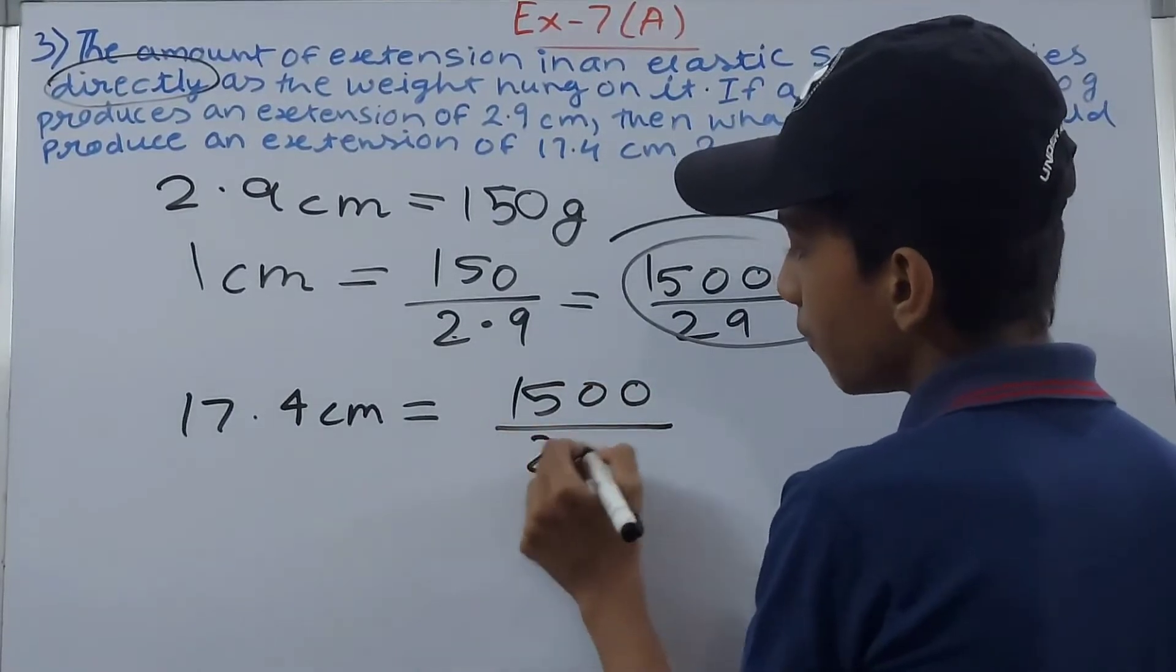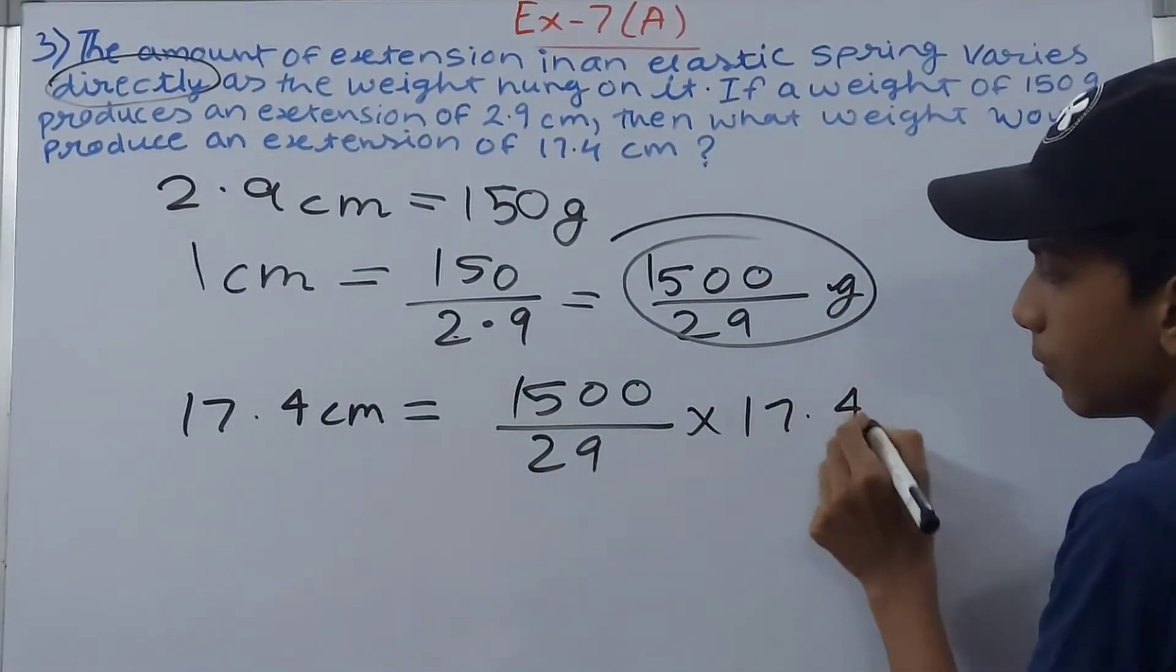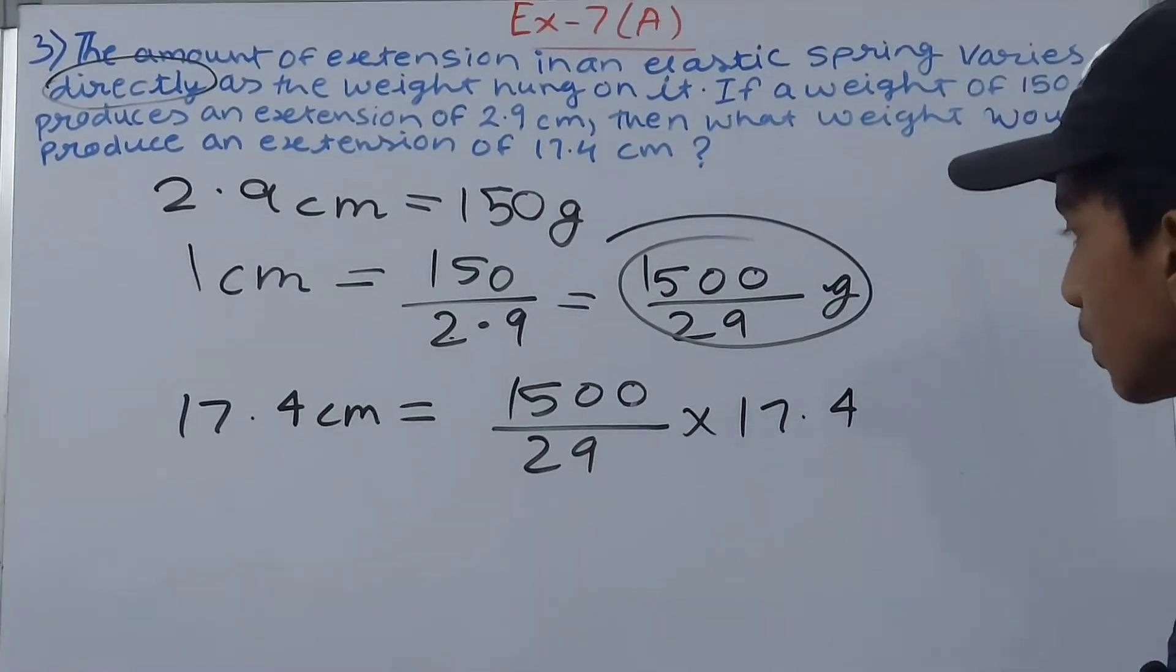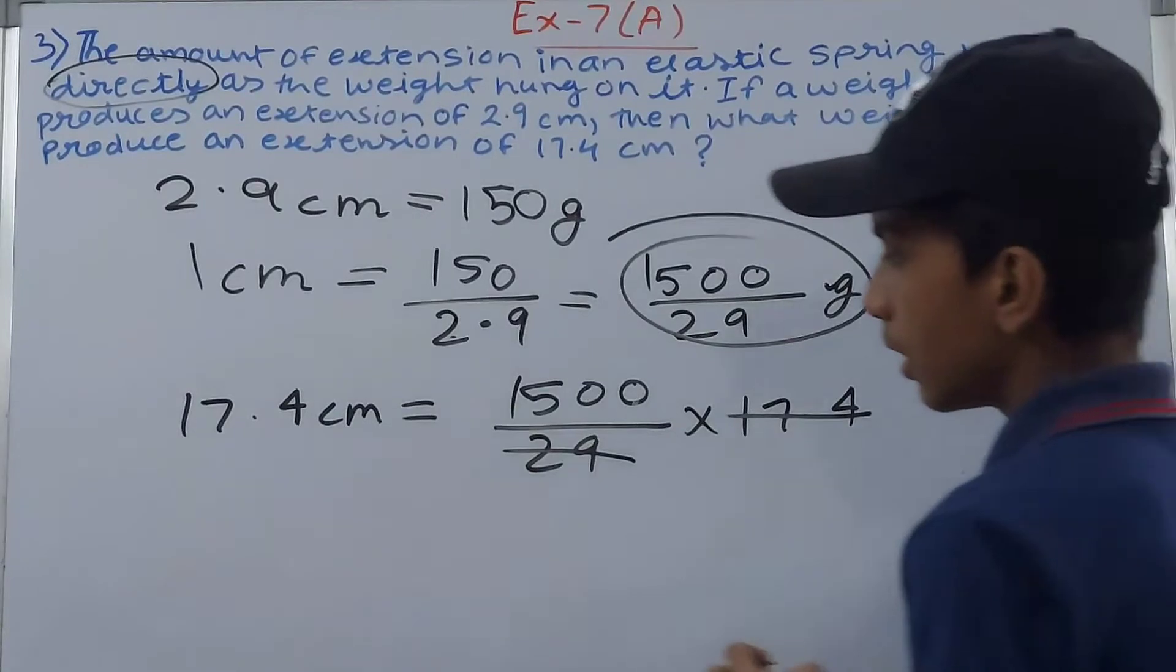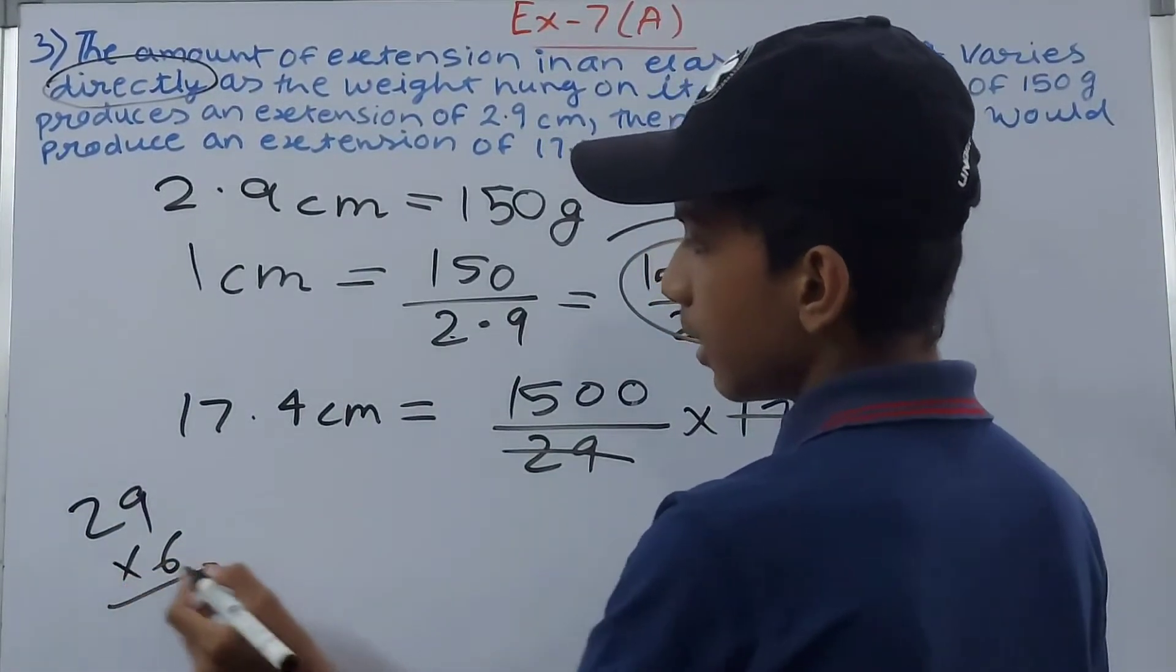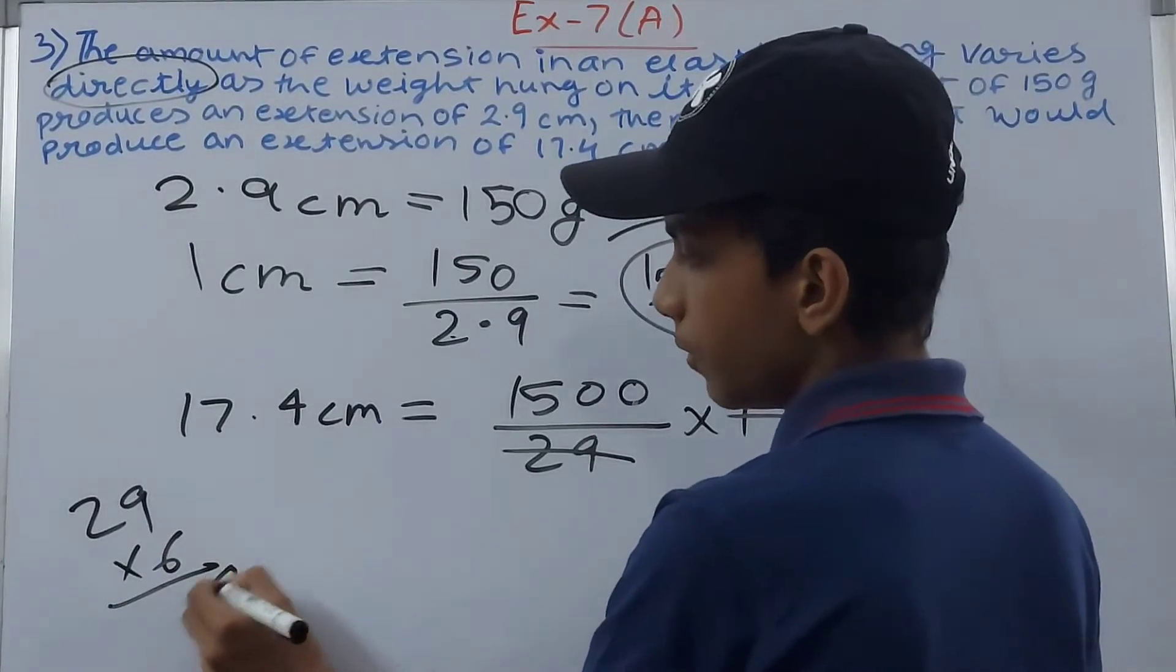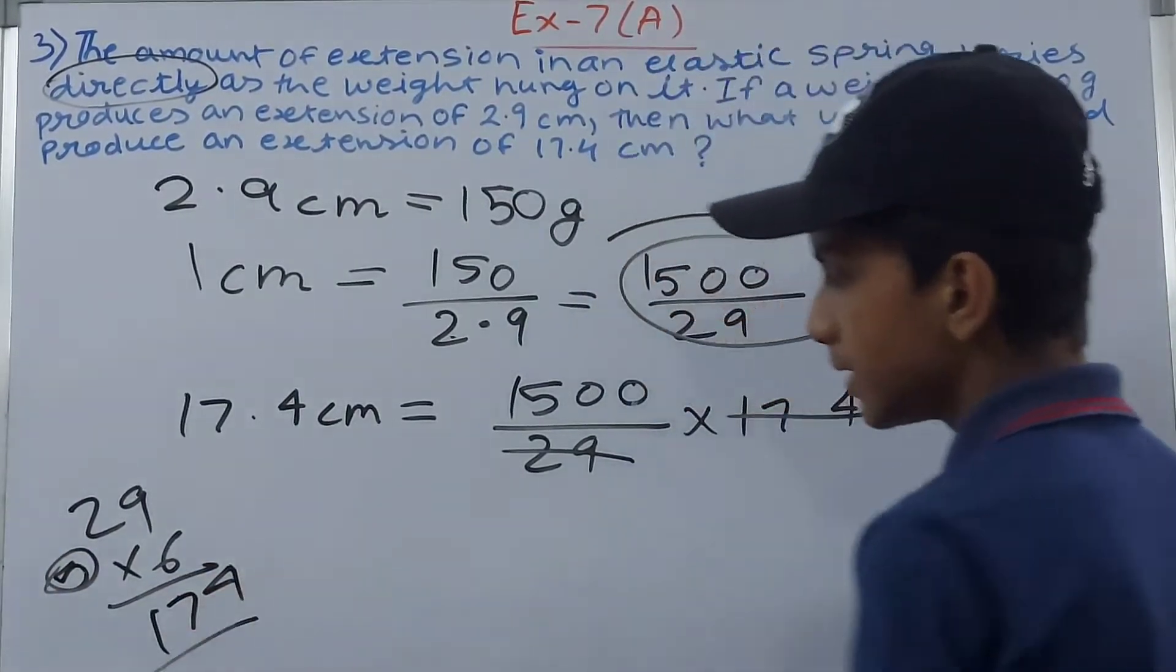So 1500 upon 29 into 17.4. I'll solve this. I'll cancel 29 and 17.4. So 29 multiplied by 6 is 54 and 5 here, 6 to the 12 and 5, gives us 17.4.